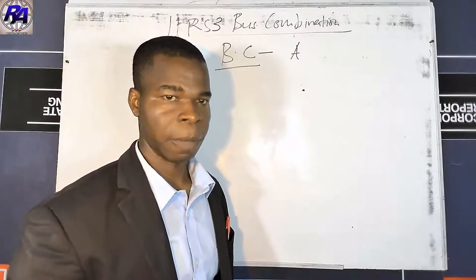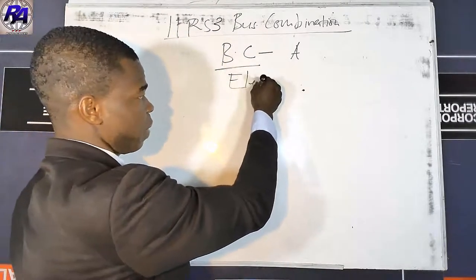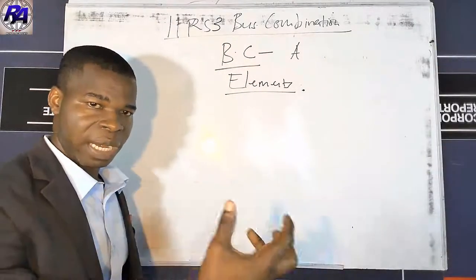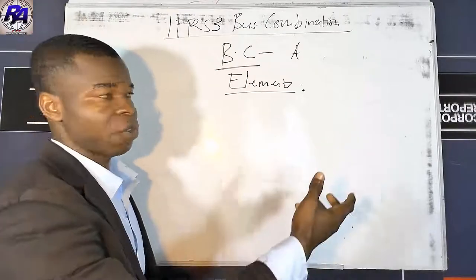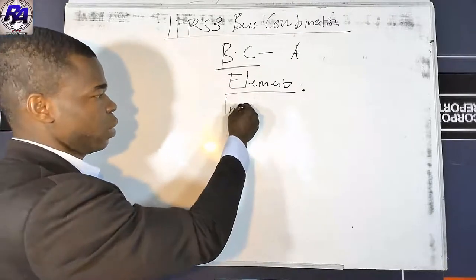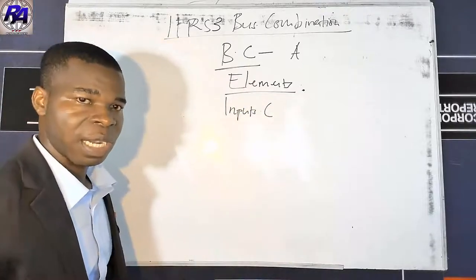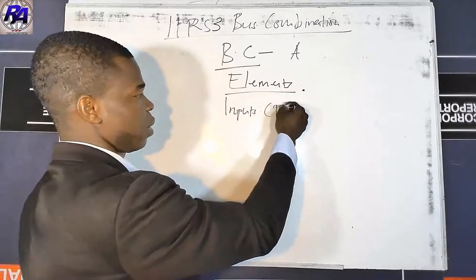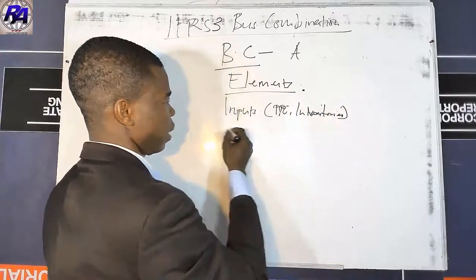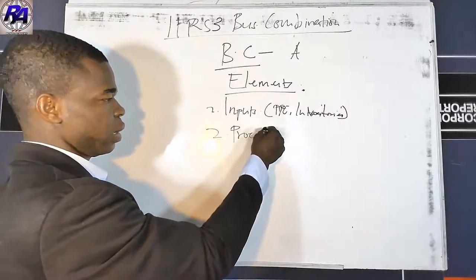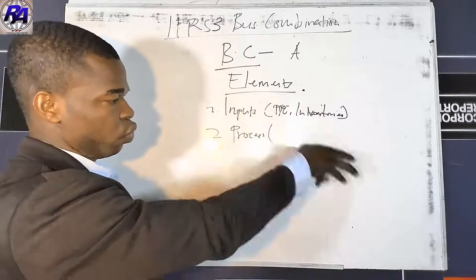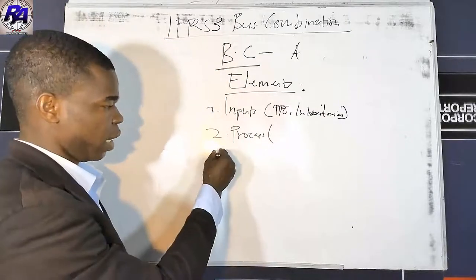The standard prescribes three elements to help identify whether the acquisition is a business combination. The first element is input — the materials used in the production process, such as IP and inventories. The second element is processes — the workforce, production process, and production plant that convert inputs into outputs.